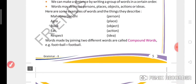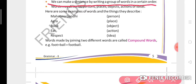We can make a sentence by writing a group of words in a certain order. So, 'I am Shruhan' - we can join the words to form a sentence. This is the form of sentence.